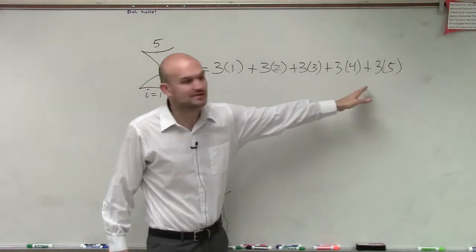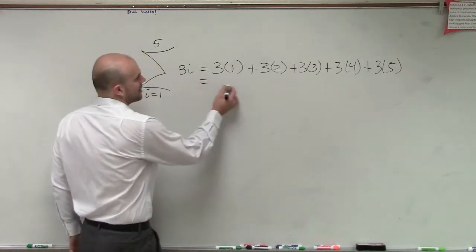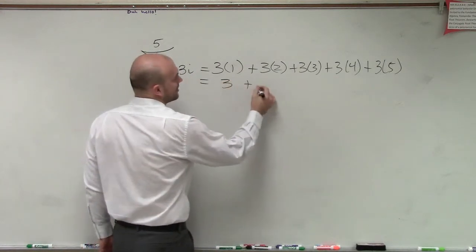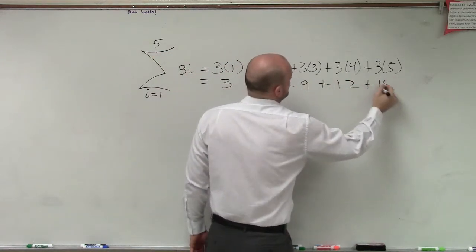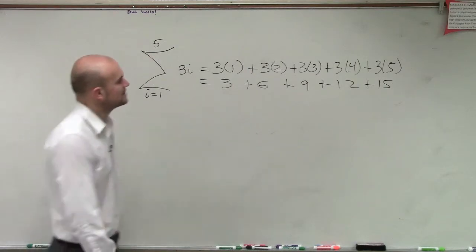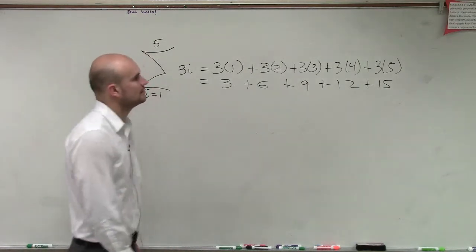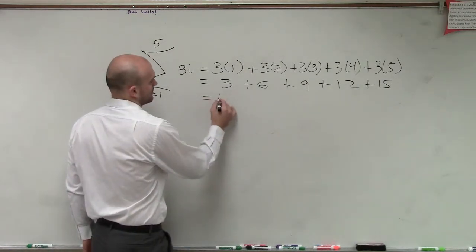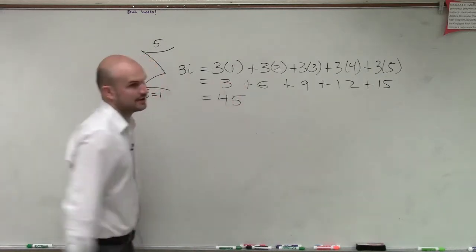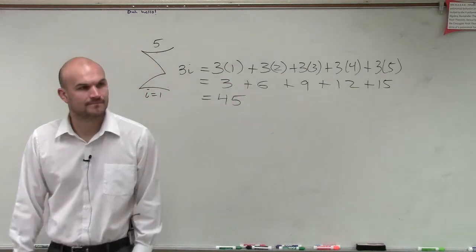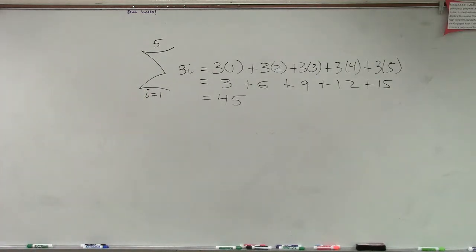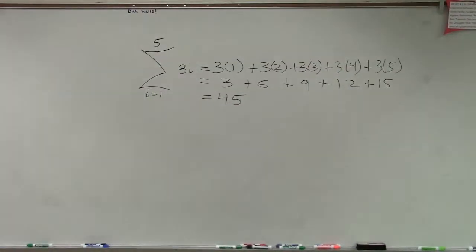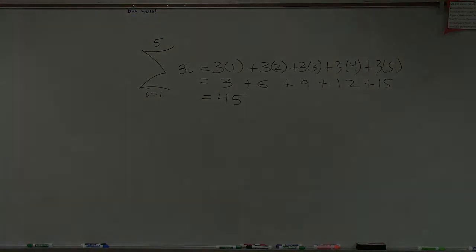Now I just need to figure out this value. So therefore, I'm really adding 3 plus 6 plus 9 plus 12 plus 15, plus 18 — that equals 45. So there we go. That's it. Is it that bad? That's all, thank you.